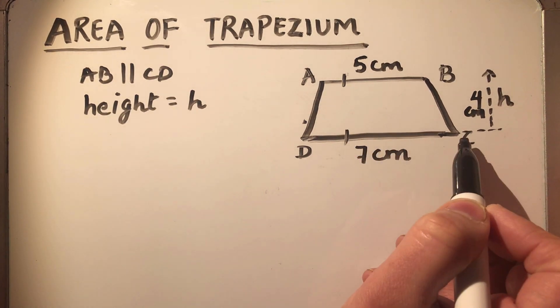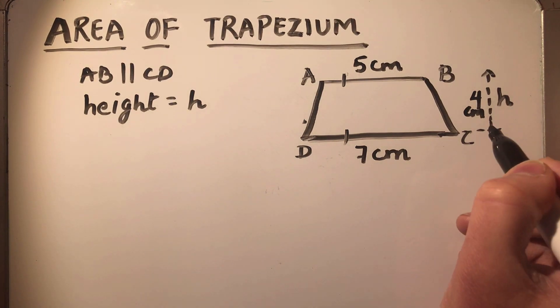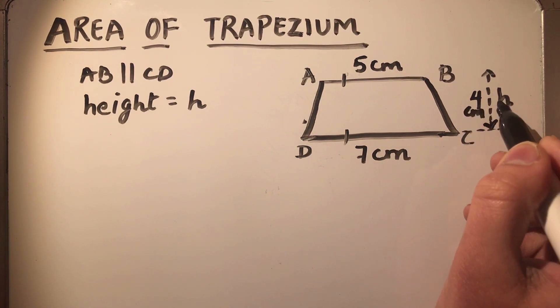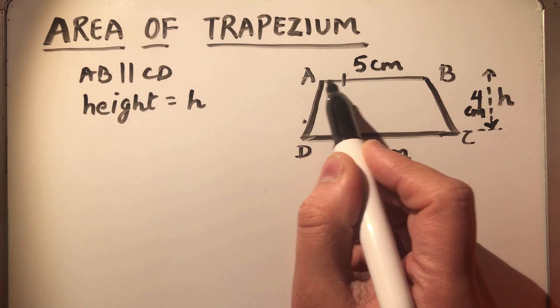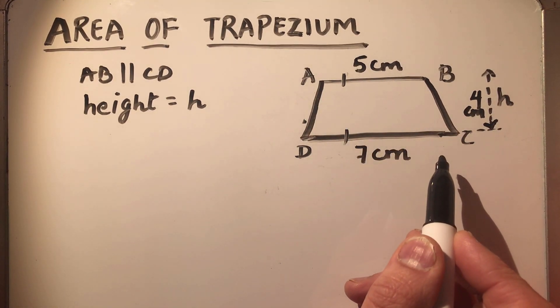The distance between AB and CD is 4 centimeters, which is also called the height of the trapezium. I have marked AB as 5 centimeters and DC as 7 centimeters.